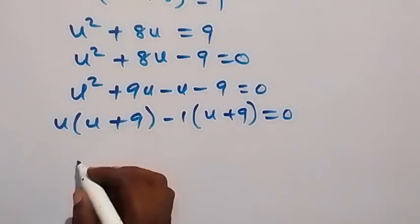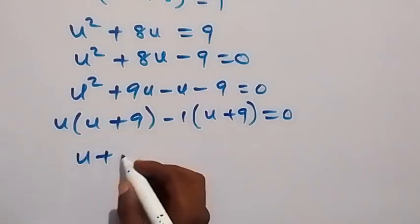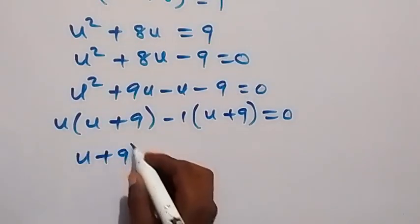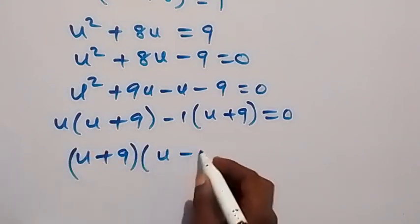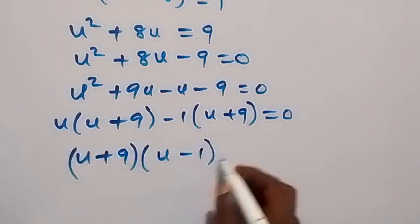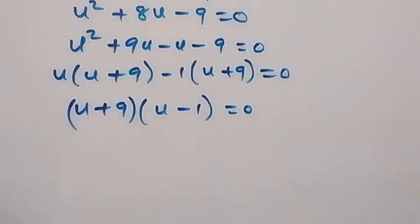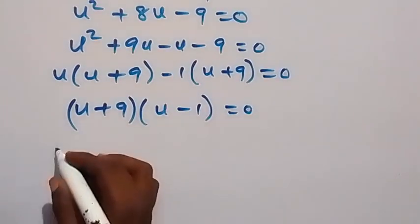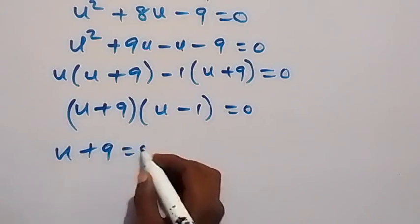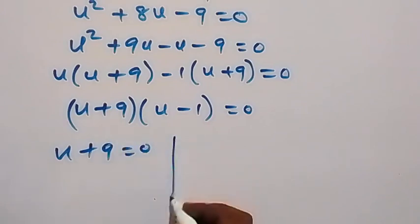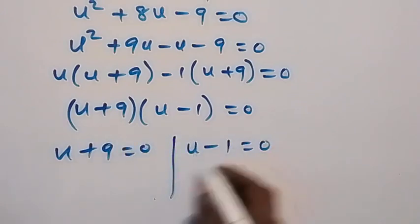Then here we have u plus 9 common, then we have into bracket u minus 1, equals to 0. So we have two possible cases here: we have u plus 9 equals to 0, or we have u minus 1 equals to 0.